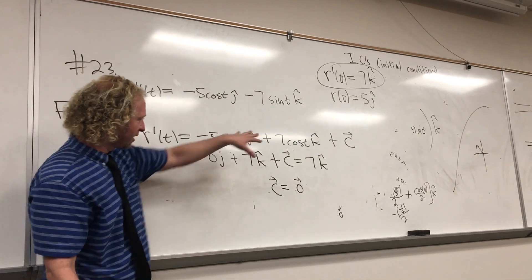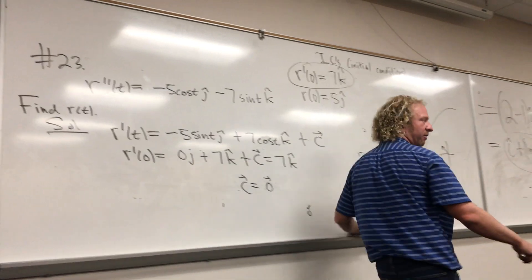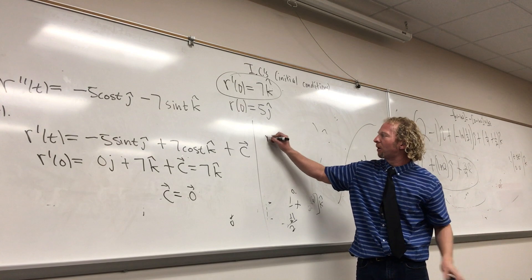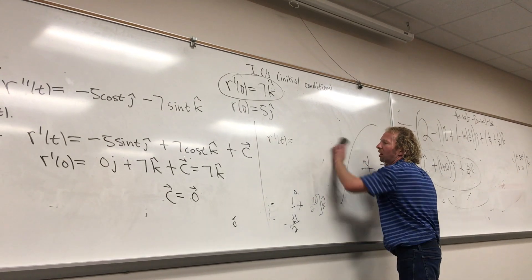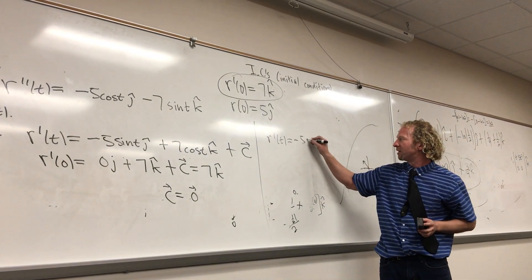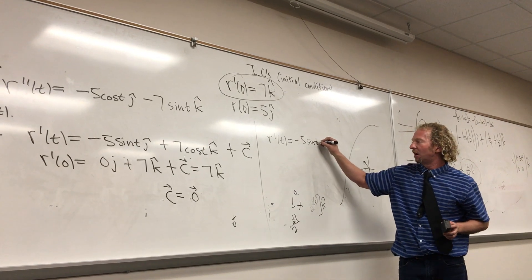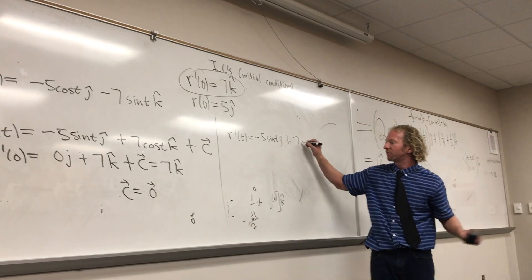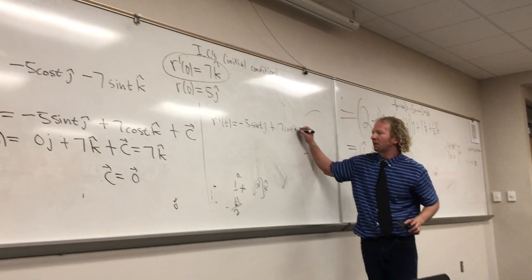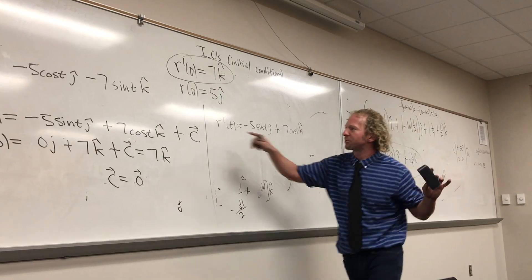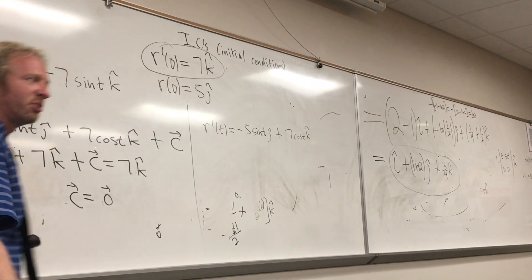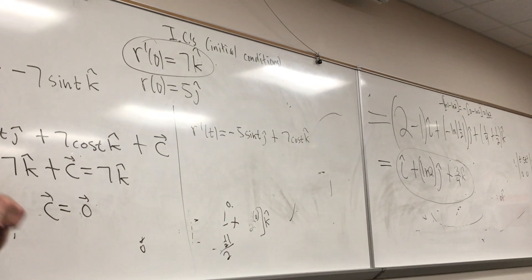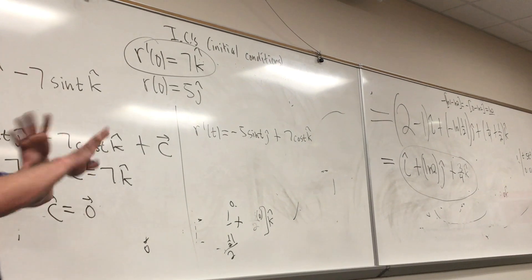So plug C back into your first derivative. R prime of t equals negative 5 sine t, j hat, plus 7 cosine t, k hat. And C was zero. In the next section, C is not zero — we'll do one and you'll see, it's a wreck. But it's good. Fractions — you'll see.